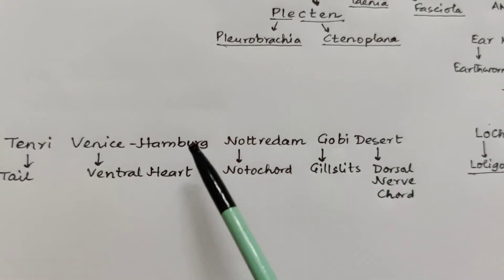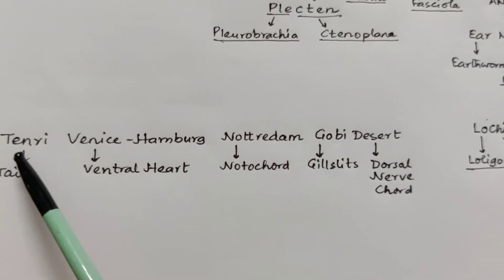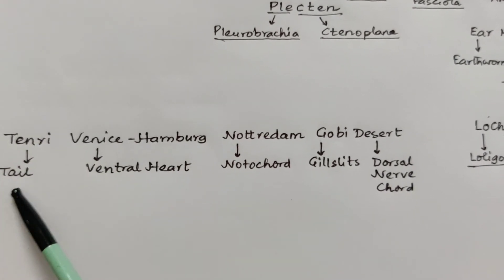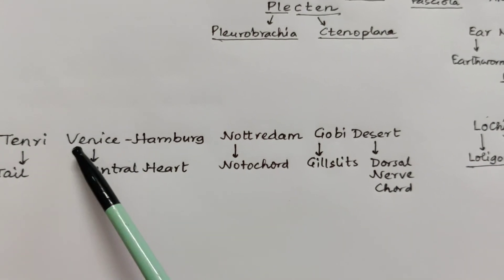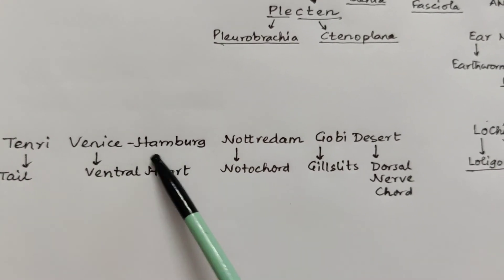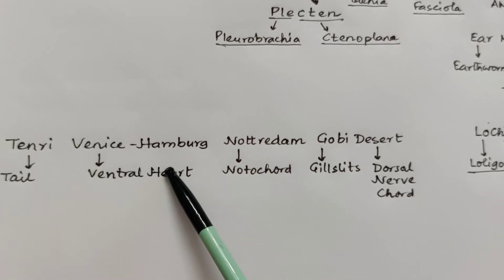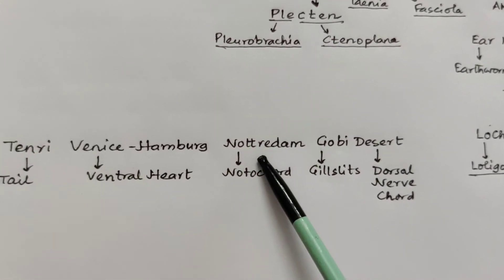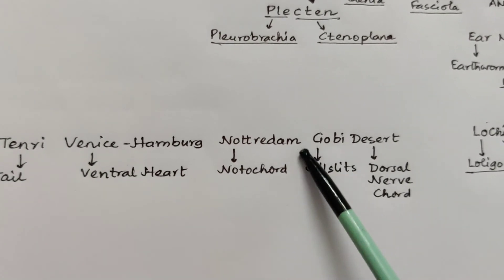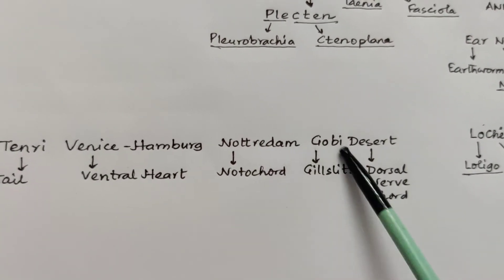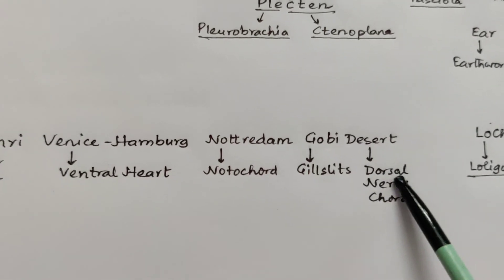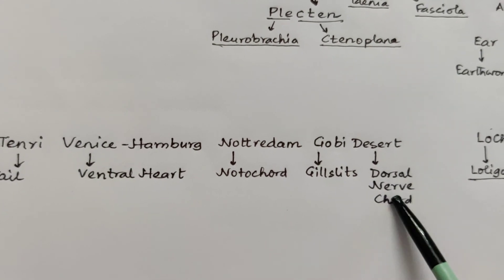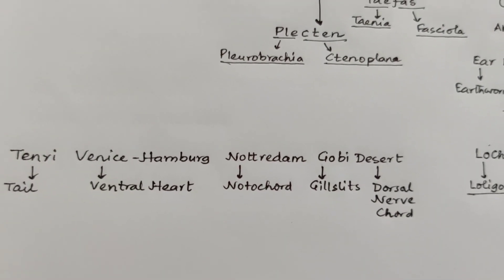If you want to know the non-chordate features, you just tell the opposite. Chordates have a post-anal tail — non-chordates have a pre-anal tail or none. Chordates have a ventral heart — non-chordates have a dorsal heart. Non-chordates have no notochord and no gill slits. And instead of a dorsal nerve cord, non-chordates have a ventral nerve cord.